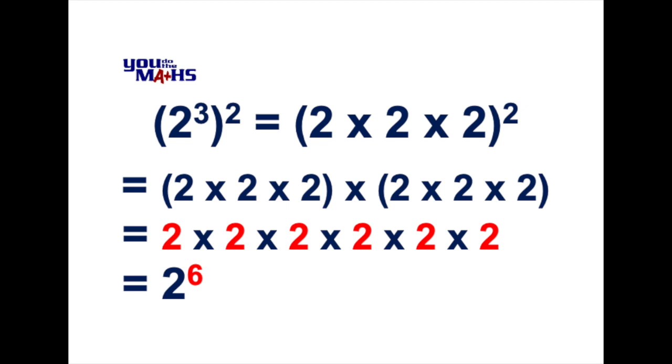But maybe there's a quicker way. And if we start with our original expression which is in brackets 2 to the power 3, and outside the bracket squared, we can see that 3 multiplied by 2 is equal to 6.